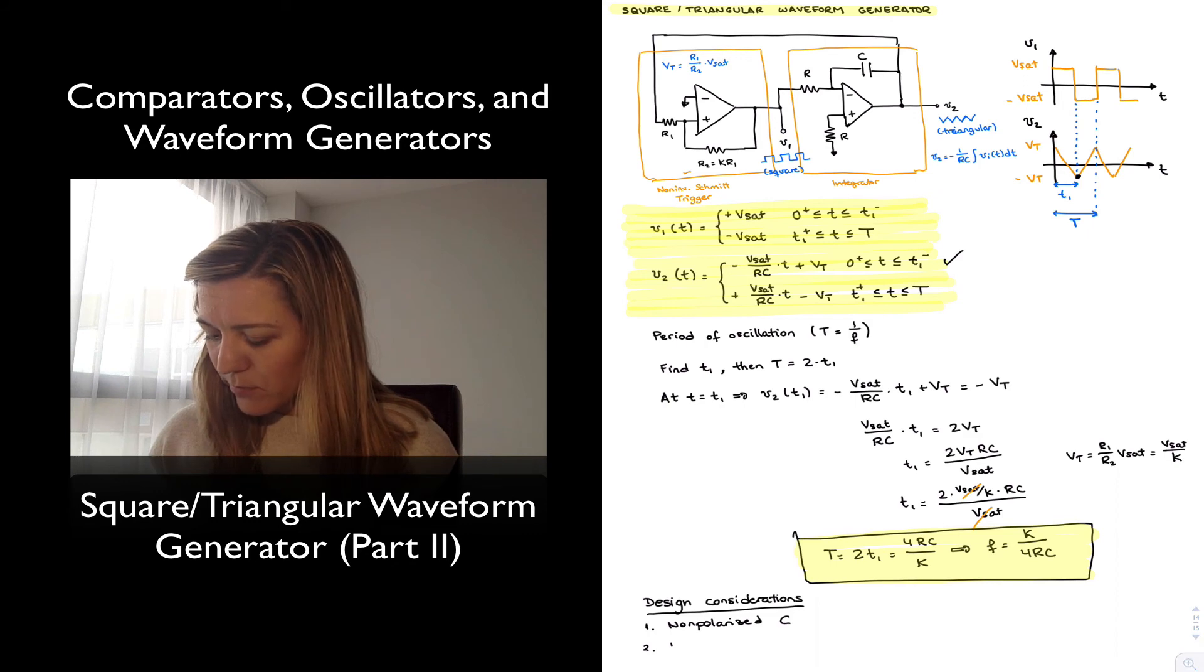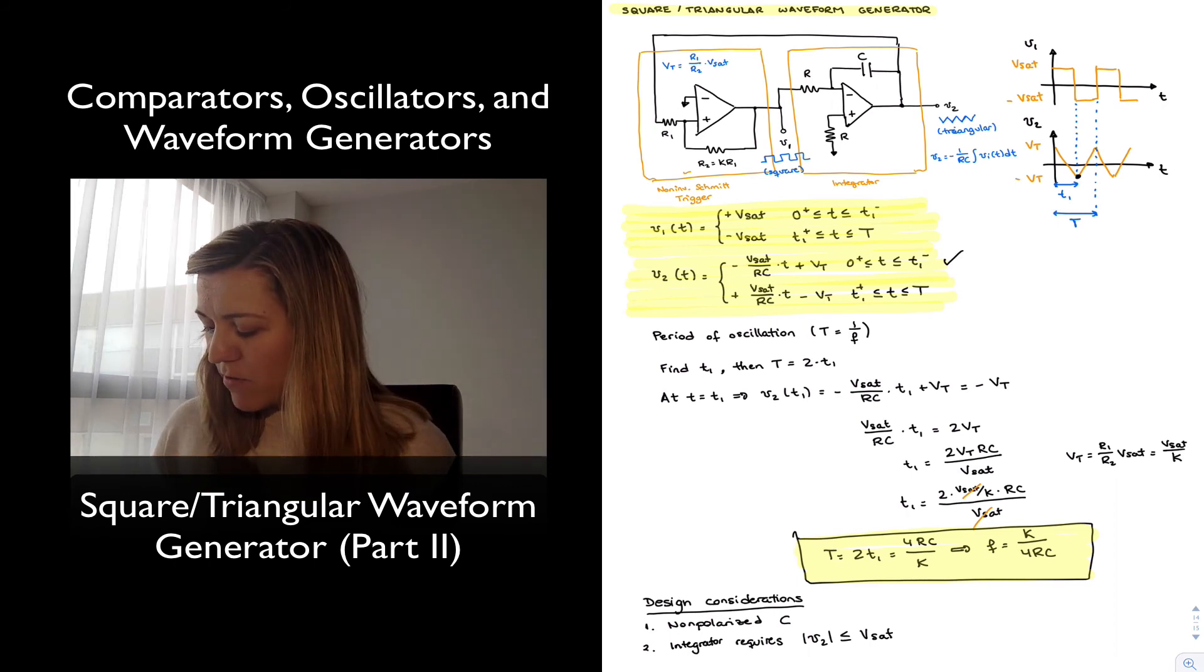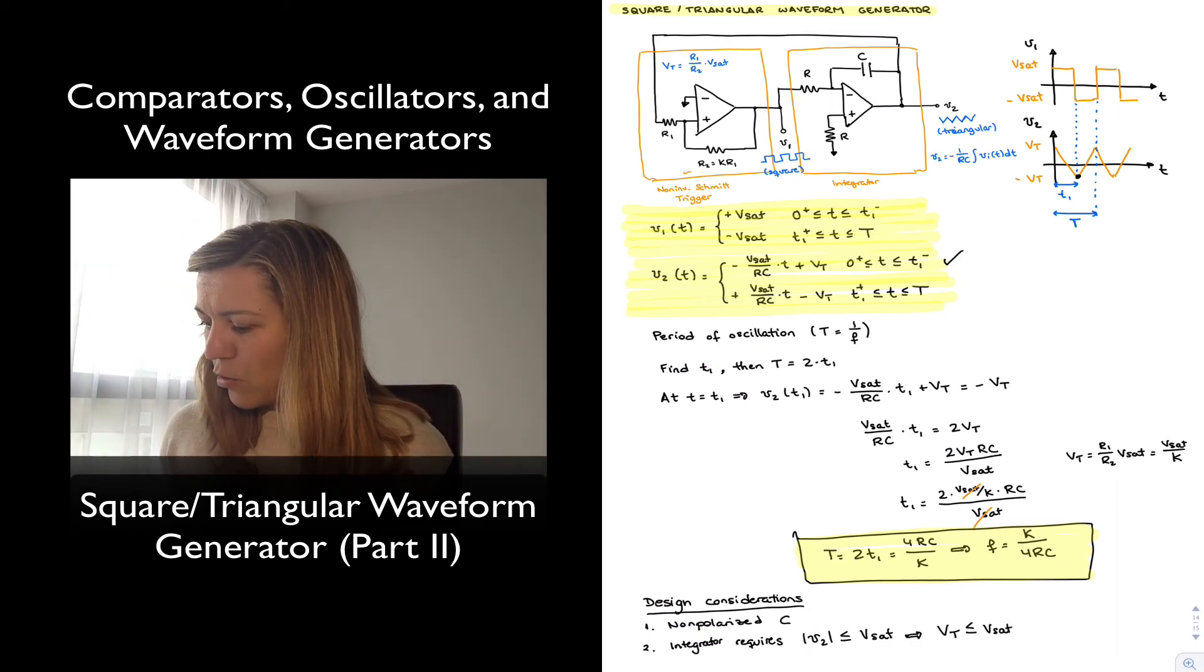So integrator requires that the absolute value of V2 needs to be less than or equal to the saturation voltage. Now, we have seen that V2 basically oscillates between positive vT and negative vT. Its maximum value in absolute terms is going to be equal to vT, and so what we want is that vT, in other words, be less than or equal to the saturation voltage for the op-amp.